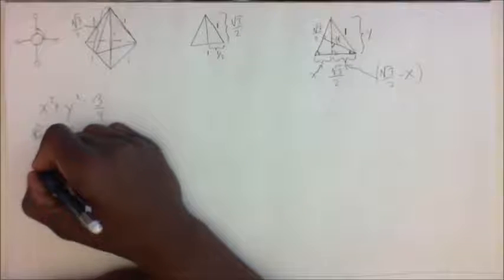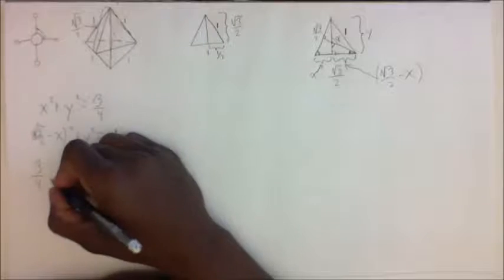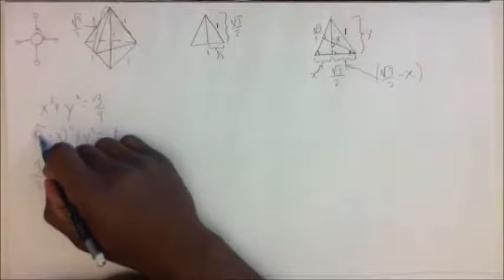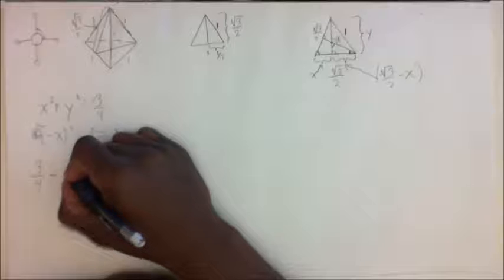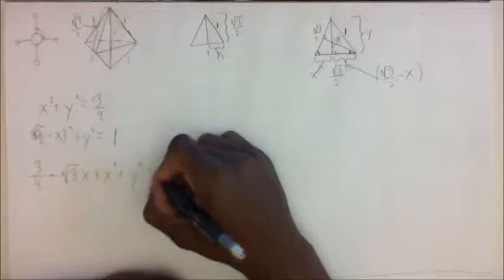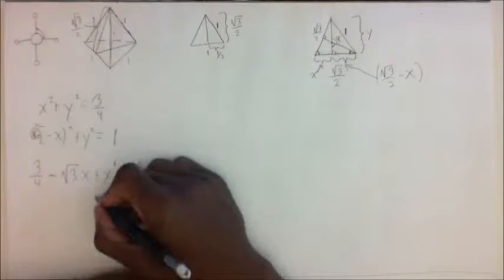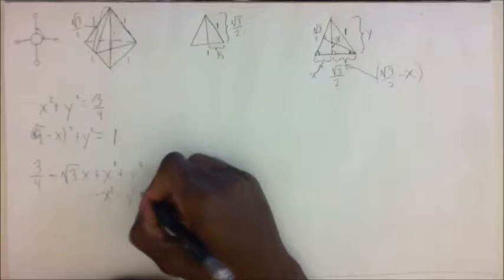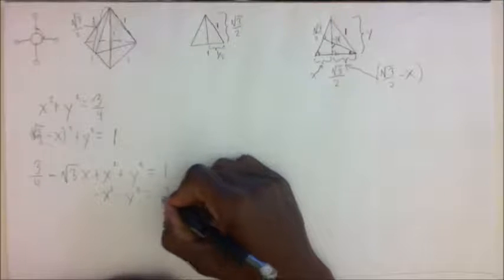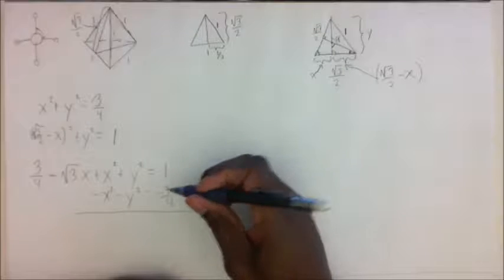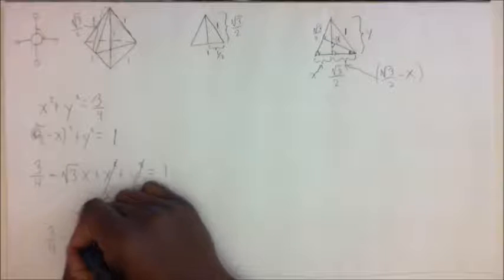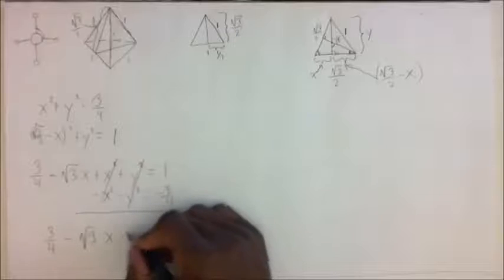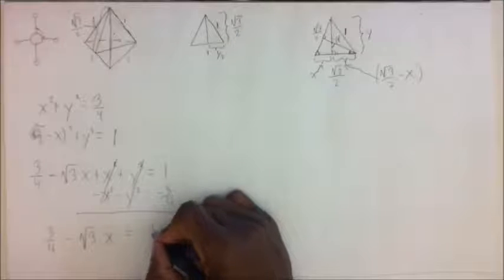Expanding the second equation: three over four minus the square root of three times x plus x squared plus y squared equals one. Subtracting the first equation from the second — that is, minus x squared minus y squared equals minus three over four — these terms cancel. So we get: three over four minus the square root of three times x equals one minus three quarters, which is one over four.